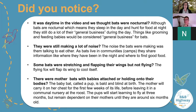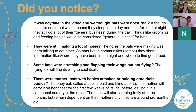Some bats were stretching and flapping their wings but not actually flying. As Glenn mentioned, they are very susceptible to heat and have difficulty regulating their body temperature. One way they regulate their body heat is by flapping their wings to cool themselves. There were some mother bats with babies attached to their bodies. The baby bat, which is called a pup, is bald and blind at birth and is born alive, just like a human baby. The mother will carry the baby on her chest for the first few weeks of its life, and then she will leave it in a communal nursery.